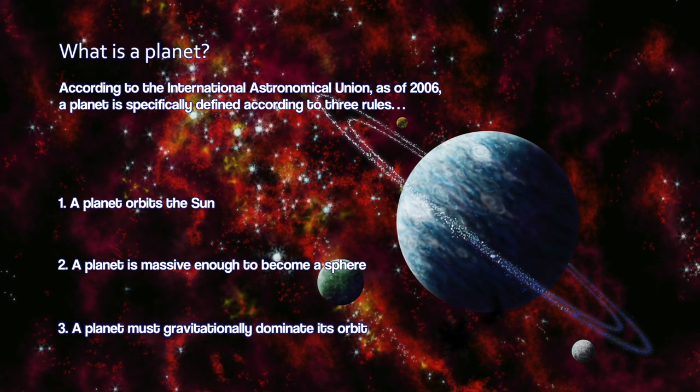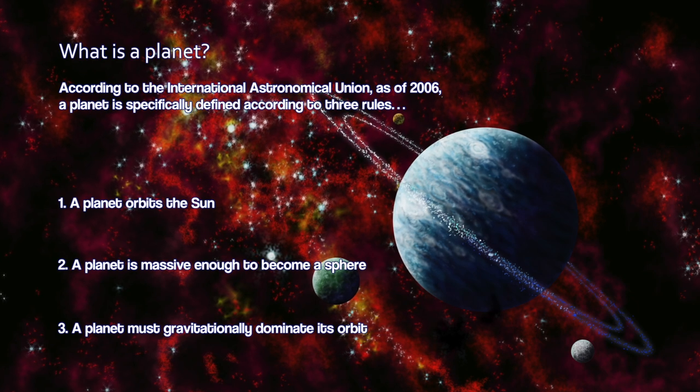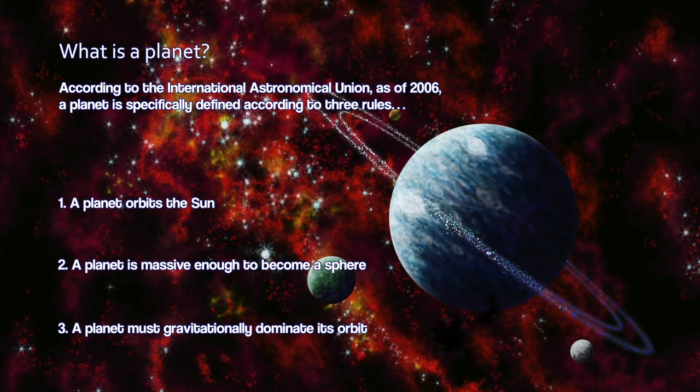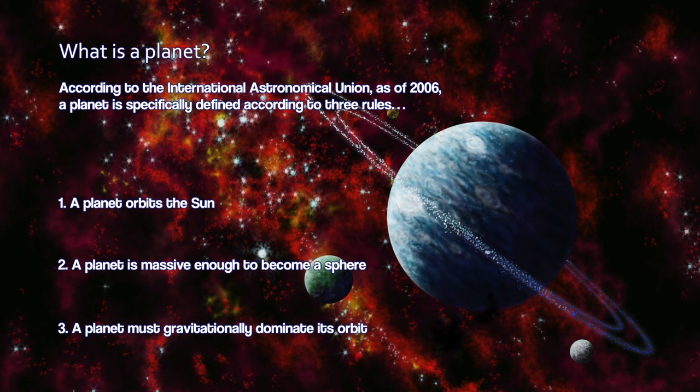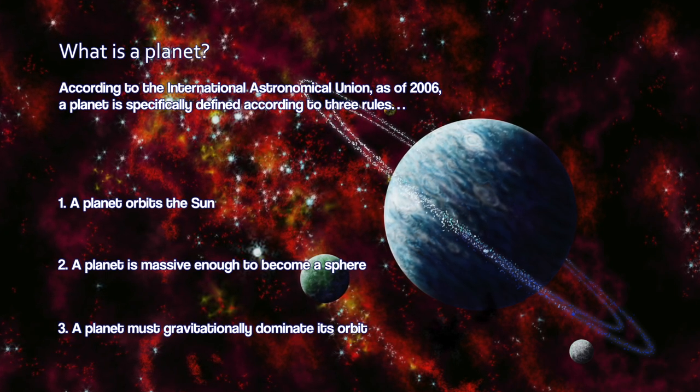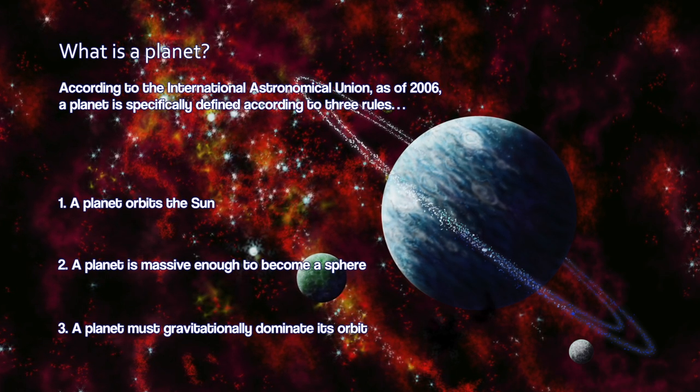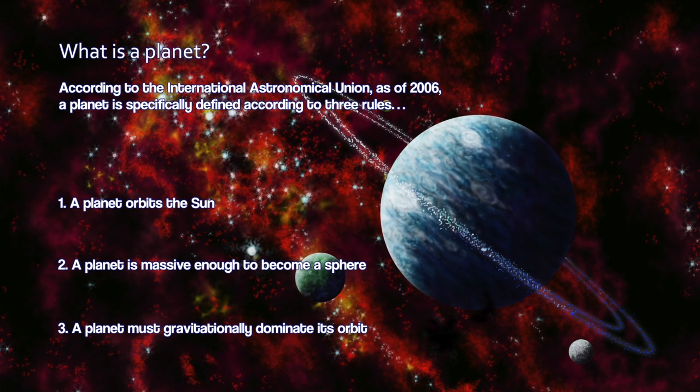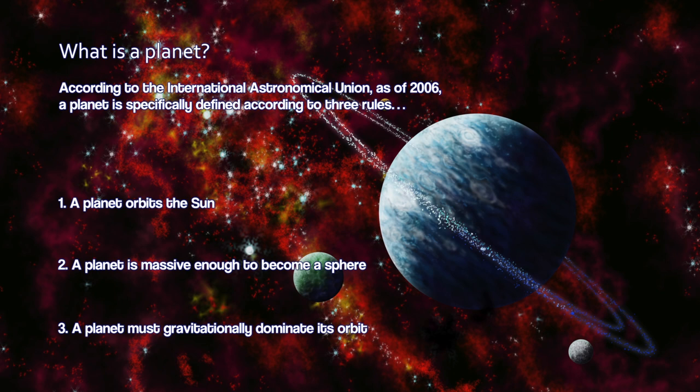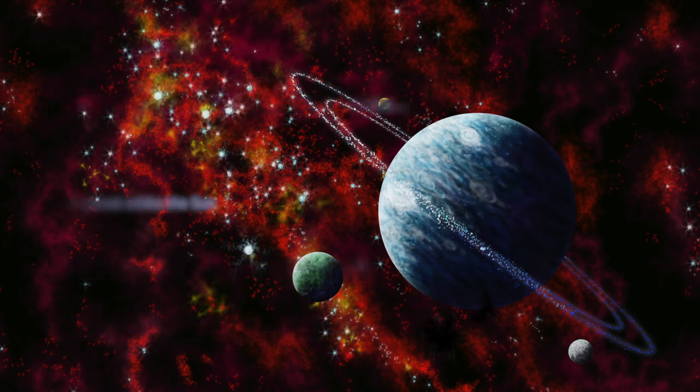And third, and this is the rule that put Pluto off the list, a planet must gravitationally dominate its orbit. It must essentially have swept its orbit clear of material and everything that crosses its orbit. Pluto does not win this one because Pluto's orbit crosses the orbit of Neptune. Because of orbital harmonics, they're never on the same side of the solar system and so they never directly encounter each other. But their orbits do cross, meaning Pluto technically has not cleared its orbit of material. Neptune has, except for Pluto, but if they did encounter each other, it would be a one-sided battle. Neptune is much more massive than Pluto and would sling Pluto out of its orbit. Therefore Neptune is a planet and Pluto is not.